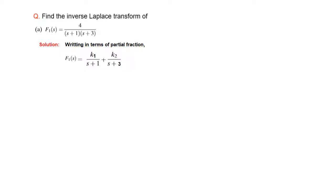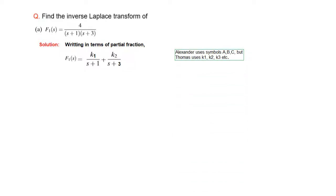We will first take help of the partial fraction equation, writing it in the form of K1 and K2 divided by the two denominator terms. Mr. Alexander uses symbols A, B, C, D and Mr. Thomas in his books has used symbols K1, K2, K3. It does not matter what the symbol is; the only thing we have to keep in mind is that we have to determine these unknowns.